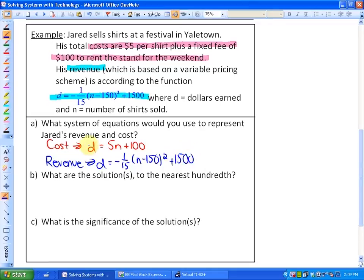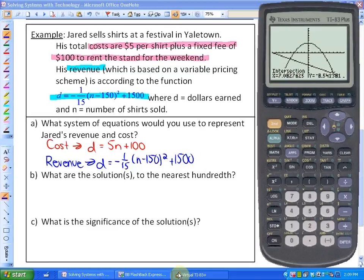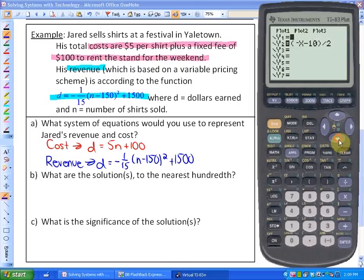We can put both of these functions into our calculator. Remember they only deal with y and x, so I'm going to go to the y equals screen and put these in. My first one is y equals 5x plus 100. My second function is y equals negative 1/15th - I'm going to put that in brackets - times (x minus 150) squared plus 1500.